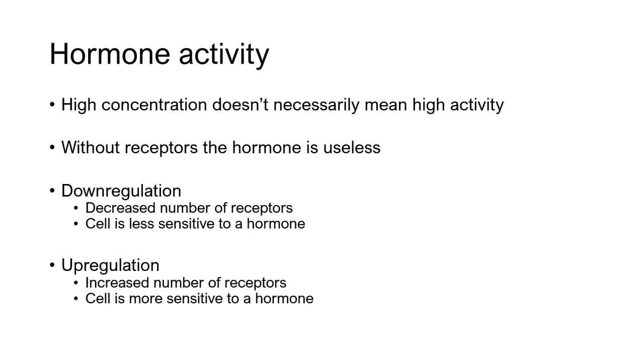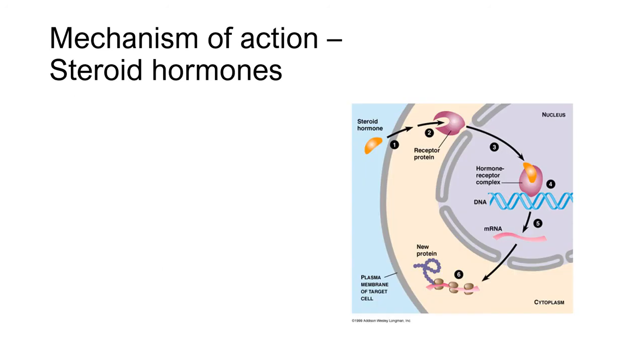Conversely, we have upregulation. And so in this case, we're creating or we've got more receptors on a cell. And that means the cell will be extremely sensitive because there's many places that can be active, many places on the cell that can be activated by this hormone.